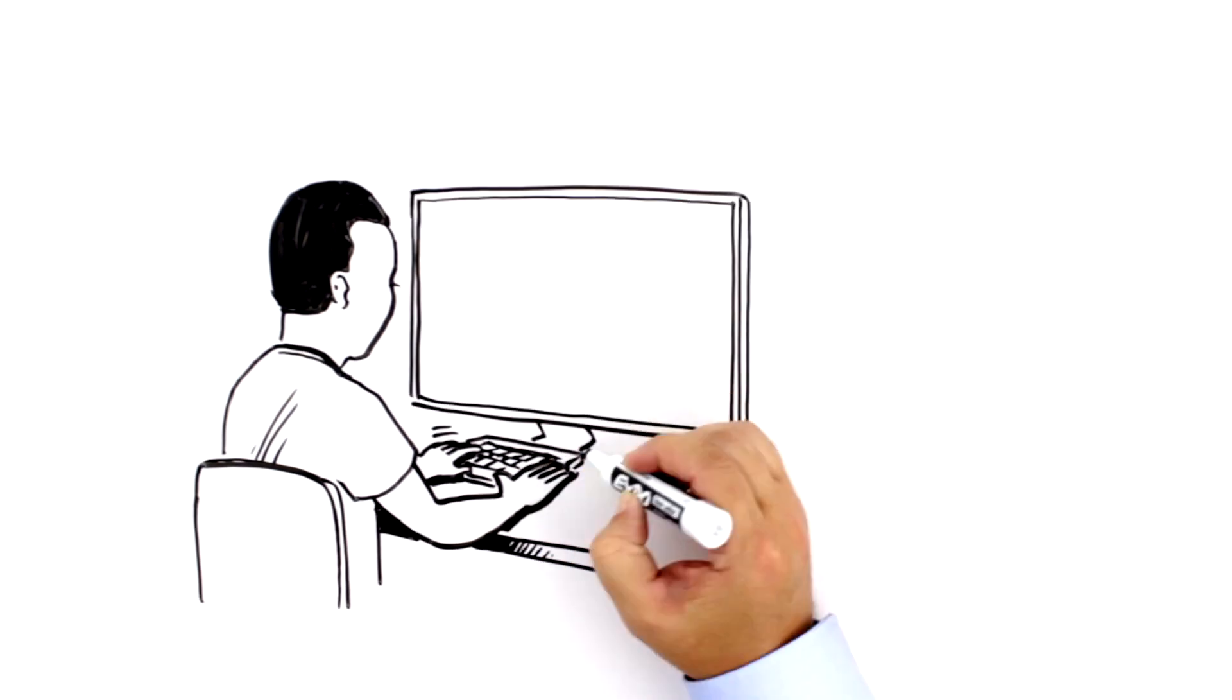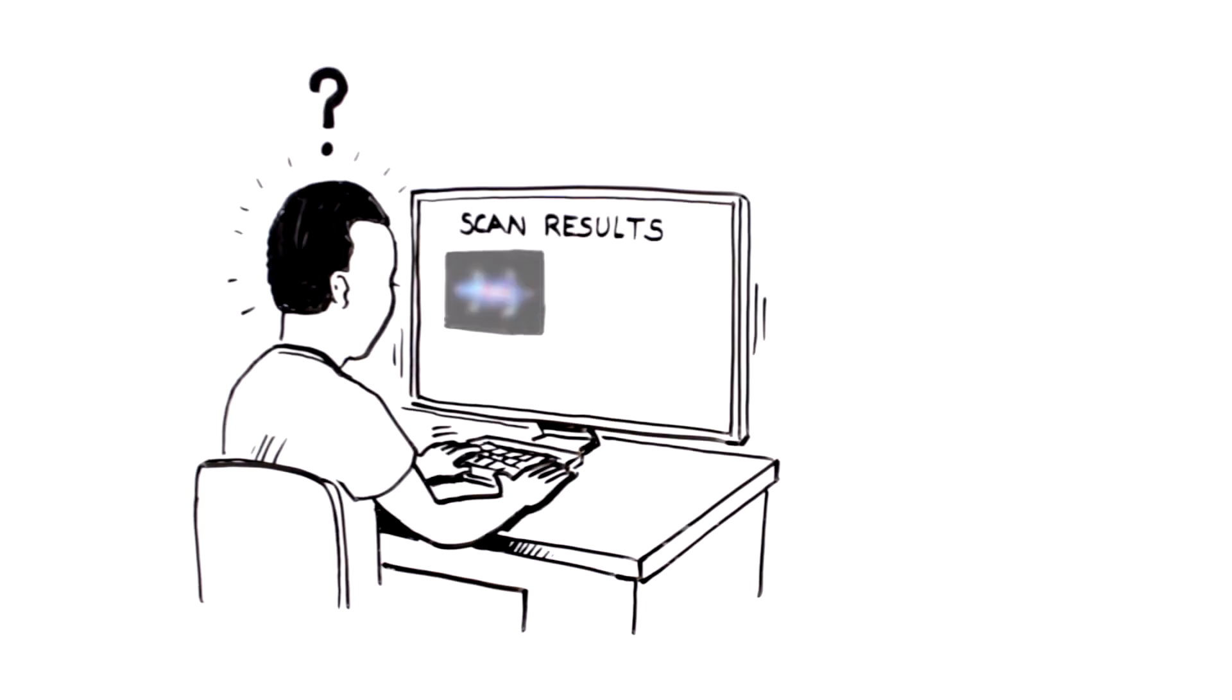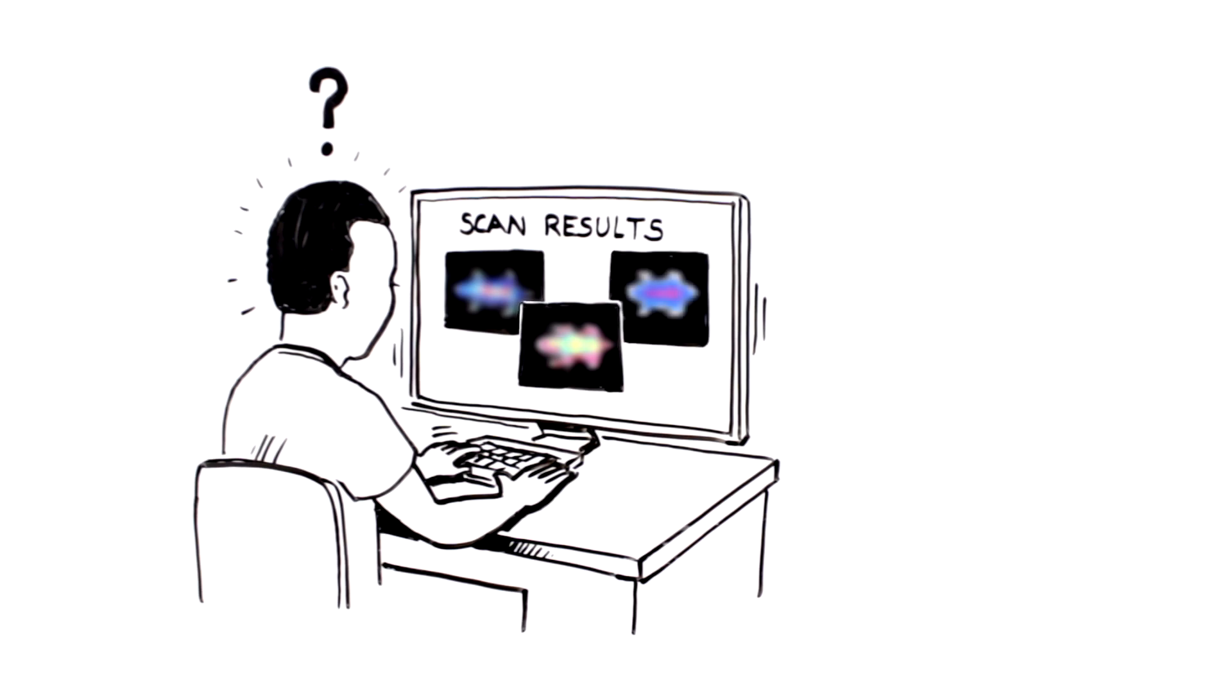Greg used to have a problem. The images from scans weren't always clear. A limited field of view made multiple scans mandatory, which slowed him down and compromised the accuracy of his data.